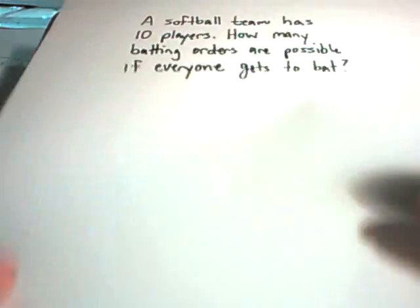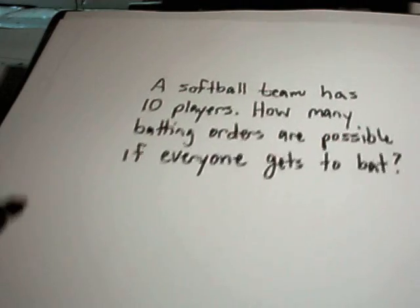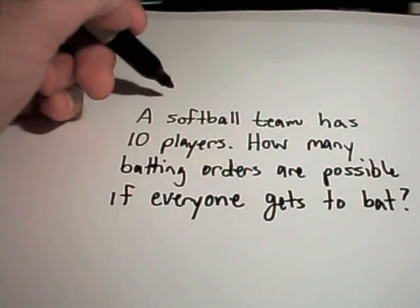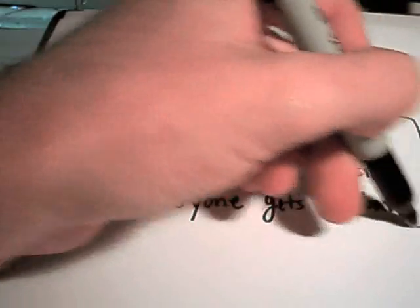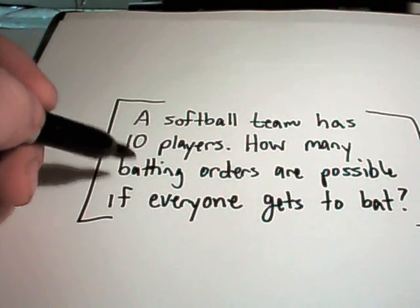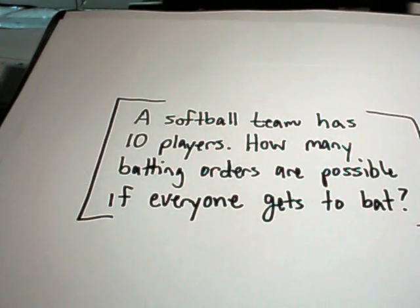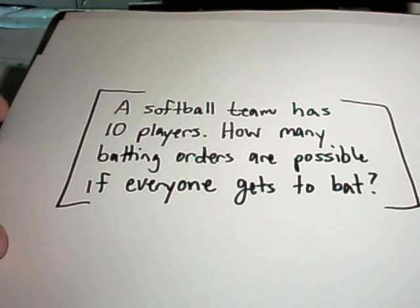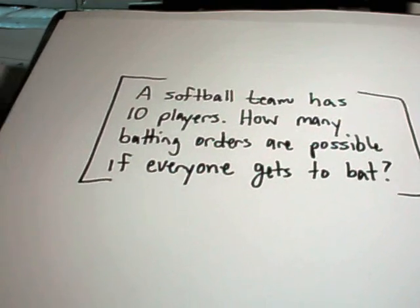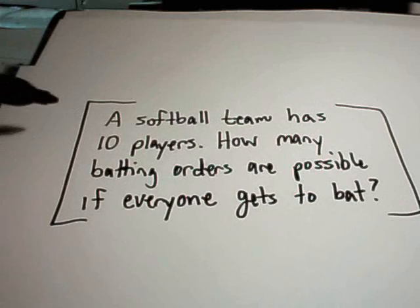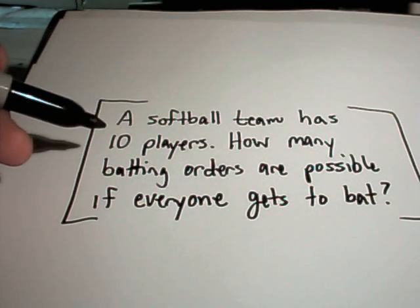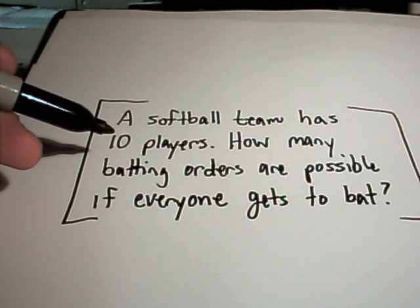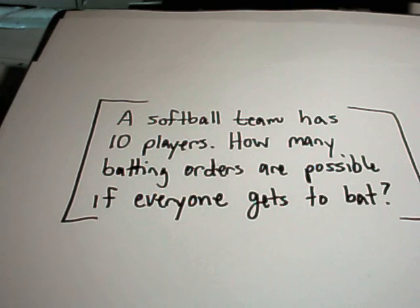Alright, so one more example here of using permutations. And in this problem, it says a softball team has 10 players and we want to know how many different batting orders are possible if everyone gets a chance to bat. Well in this case, again, we're sampling without replacement because if I get to bat first, I don't get to bat fifth as well. I go once and then everybody else gets their turn.